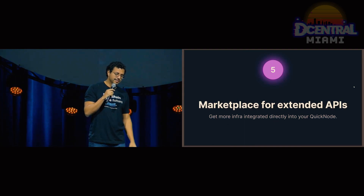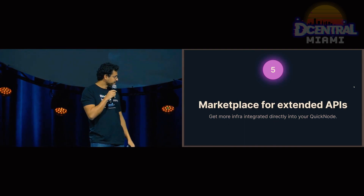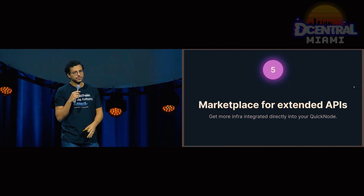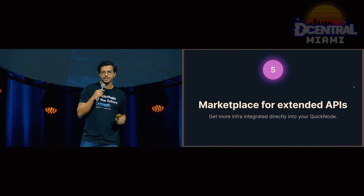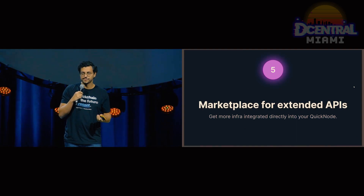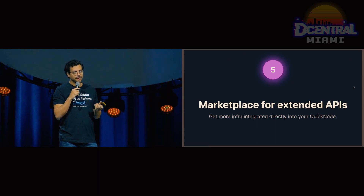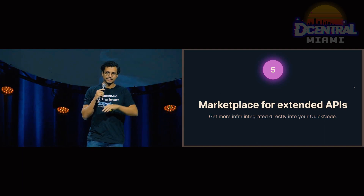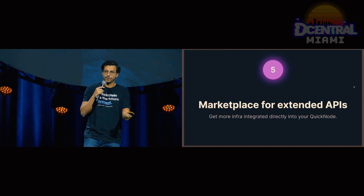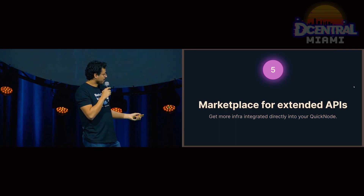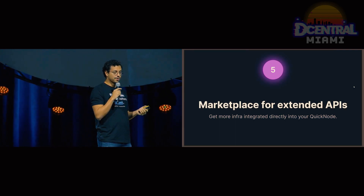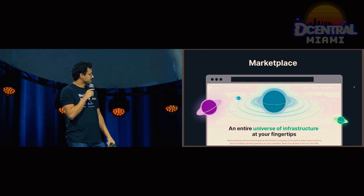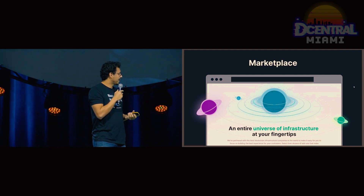The last item is actually the one I'm most excited about. We built a marketplace for extended APIs. Within QuickNode, you get all the core RPC services, index services, alerts, and the NFT API via GraphQL. But what about every single other piece of infrastructure that exists in the blockchain space that is not part of QuickNode? We built the marketplace so that you can get more infrastructure integrated directly into QuickNode. You can think of it as a universe of infrastructure at your fingertips.